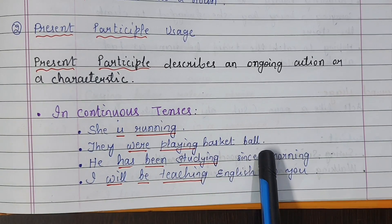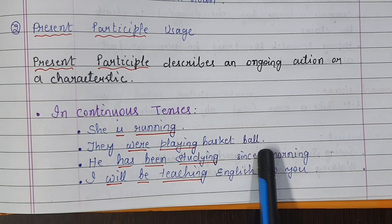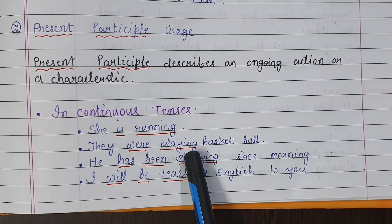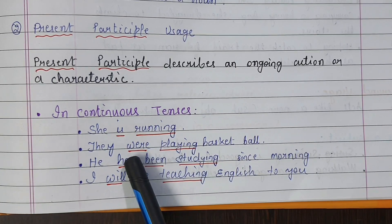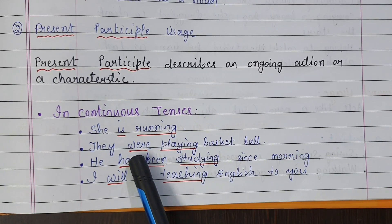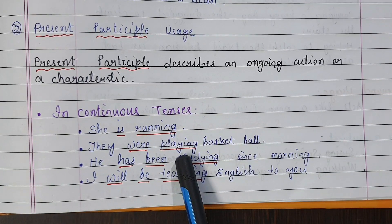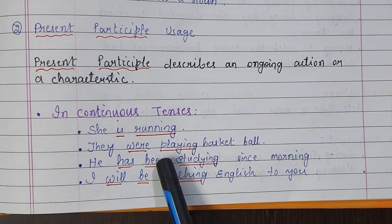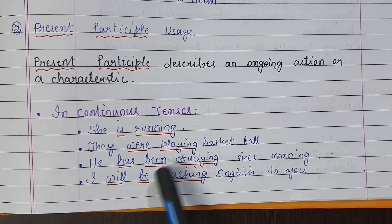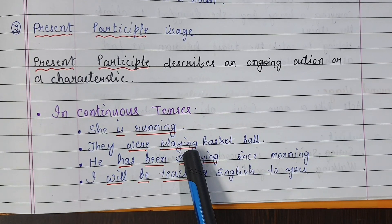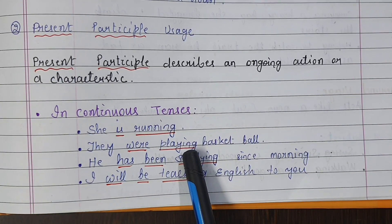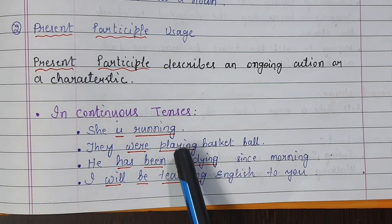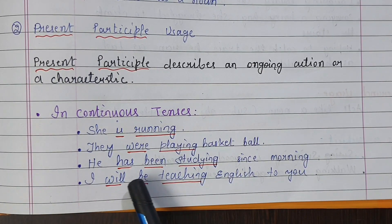'They were playing basketball.' Were playing — past be-verb plus playing. This is past continuous. Playing is what? Present participle.